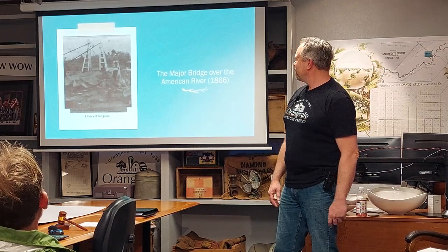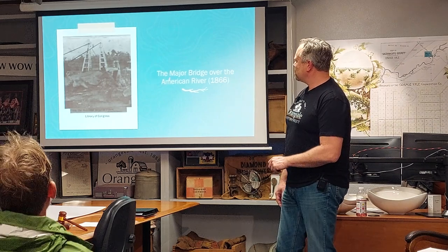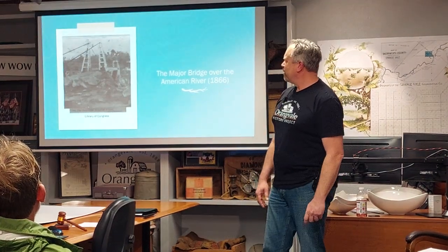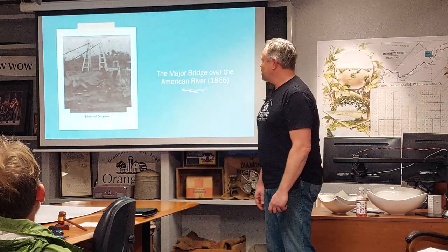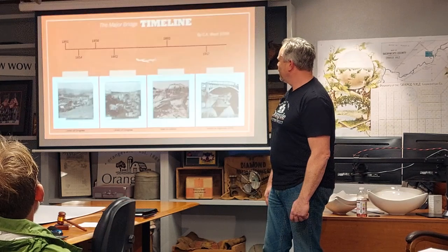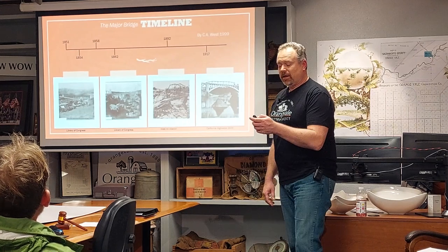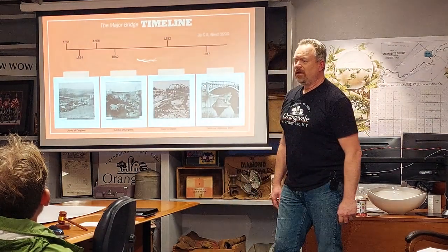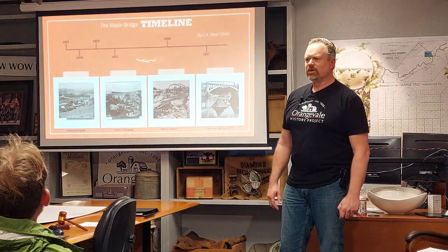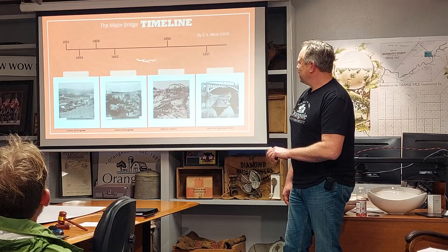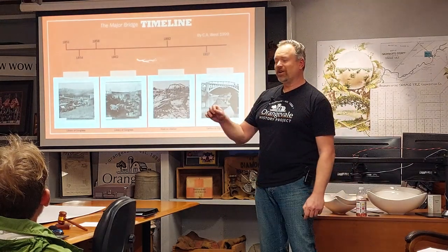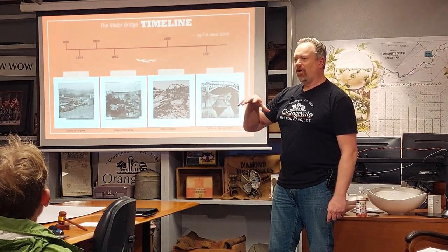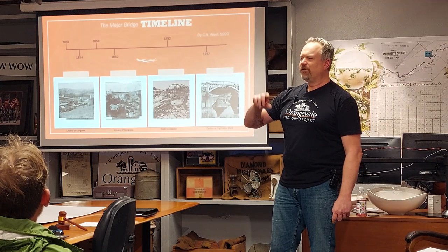Let's start with the Major Bridge over the American River. This is an image from 1866 — the Library of Congress had some nice glass negatives from that year and we were able to get those from the archives. I'm heavily relying on Carol Ann West's timeline. People around Orangevale will have heard of her — she was a strong historian and a proponent for Orangevale, and actually did a big push to have the steel truss bridge renamed the TB Hall Bridge, because Hall was one of the colonizing board members and a strong proponent for replacing the bridge.